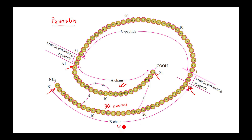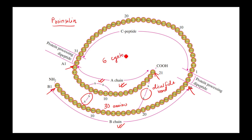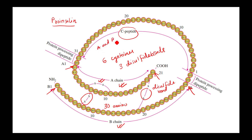Chain A and chain B are connected by three disulfide bonds. There are six cysteine groups forming these three disulfide bonds. Once we remove the connecting C chain, we are left with chain A and chain B connected by the three disulfide bonds, and that structure is called insulin.